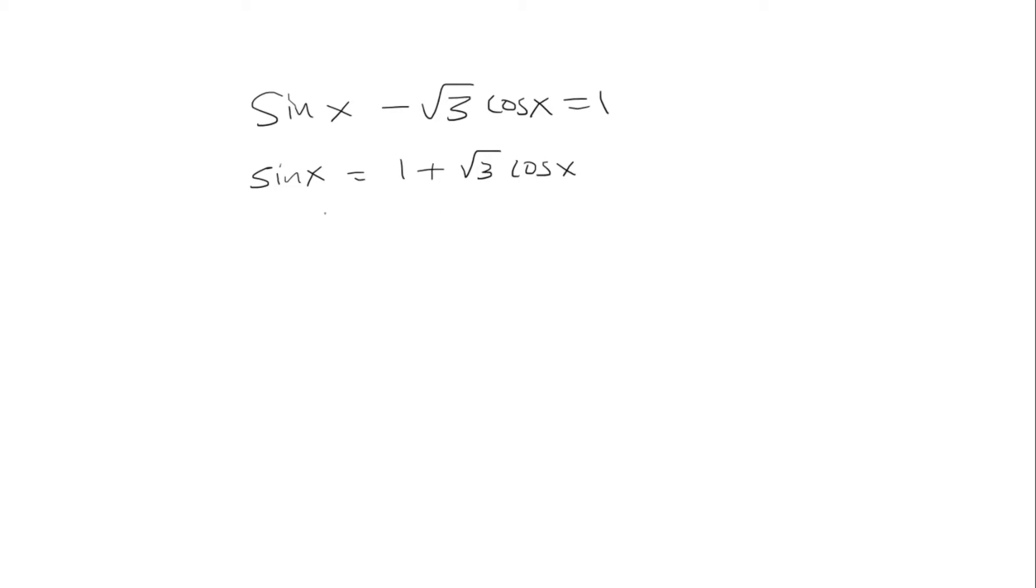So we're going to add the root 3 cosine of x to the right. And the trick here is you want to have this equation depend only on sine or cosine. You don't want to have both sine and cosine. So the way to get around that is to square both sides.